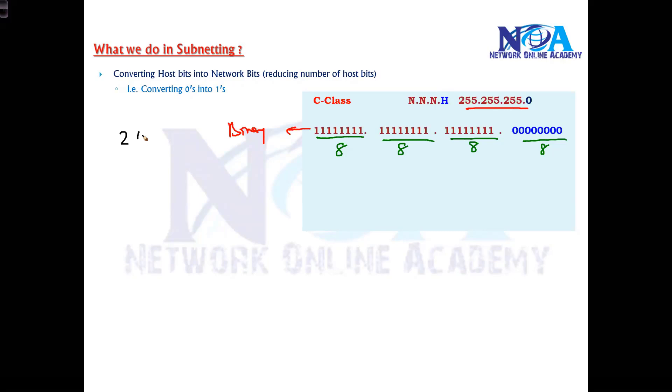Which means by default there are 24 network bits and 8 host bits. If you count, there are 24 network bits and 8 host bits. If you write the same in decimal values, we call it 255.255.255.0. As per the default, how many host bits are here? Eight. By default in C class there are eight host bits, so the size of the network is 2 to the power of 8, which is 256.